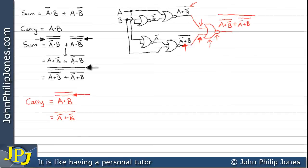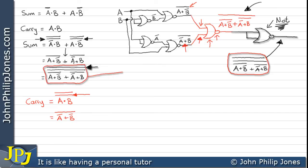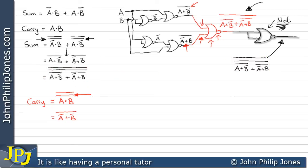We now need to consider the top NOT. We simply take the output from this gate and put it as an input to a NOR gate with its inputs coupled — in other words, a NOT gate. This puts a bar across the top, matching exactly what we need. We can see quite clearly it's the same expression, so we've built the sum part using NOR gates.